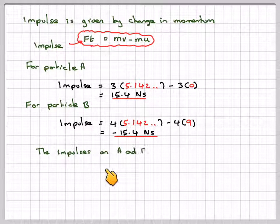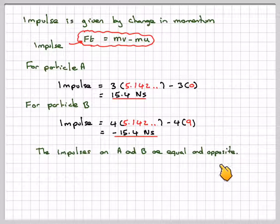Notice that the impulse on A and B are equal and opposite. That's it.